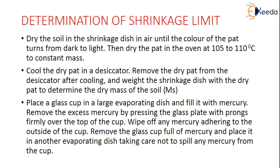Determine the mass of the wet soil sample, M1. Dry the soil in the shrinkage dish in air until the color of the pad turns from dark to light, then dry in the oven at 105 to 110 degrees Celsius to constant mass. Cool the dry pad using a desiccator, then remove and weigh the shrinkage dish with the dry pad to determine the dry mass of the soil, Ms.